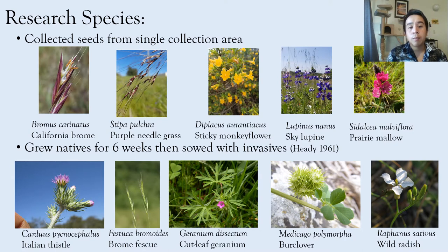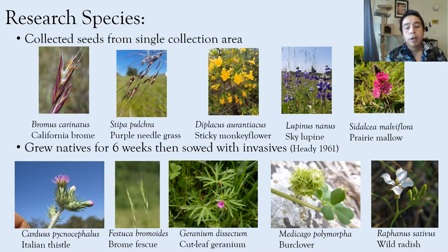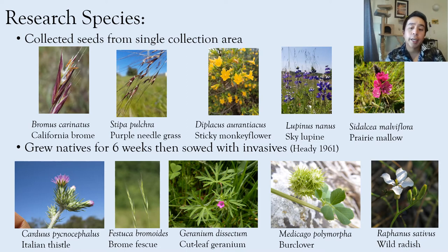To better test these questions, we set up an experiment using ten species — five native and five non-native. The native species are Bromus carinatus, Stipa pulchra, Diplacus aurantiacus, Lupinus nanus, and Sidalcea malviflora. For the non-natives, we used Carduus pycnocephalus, Festuca bromoides, Geranium dissectum, Medicago polymorpha, and Raphanus sativus, all of which are classified as invasive in California. For the native species, we chose a variety of life forms, families, and phylogenetic histories to help encompass a larger range of plant diversity.